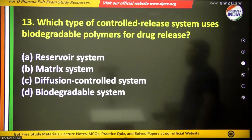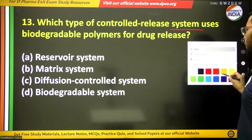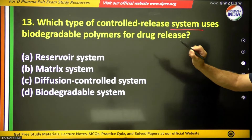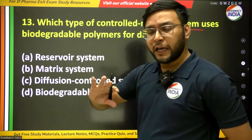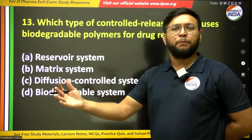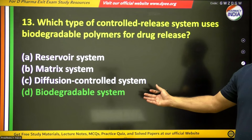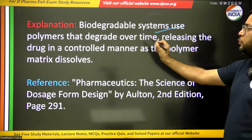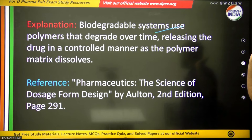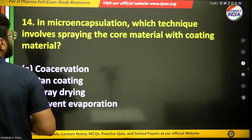The thirteenth question: which type of controlled release system uses biodegradable polymers for drug release? Biodegradable means they degrade biologically without any extra steps. The answer is the biodegradable system — it uses polymers that degrade over time, releasing the drug in a controlled manner as the polymer matrix dissolves.